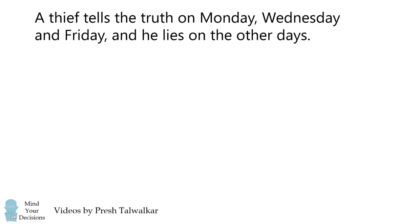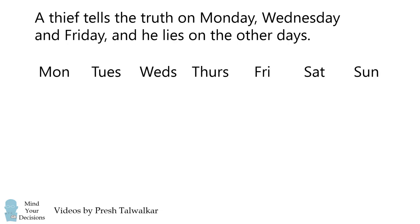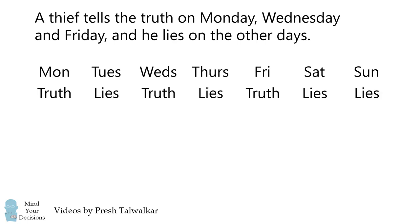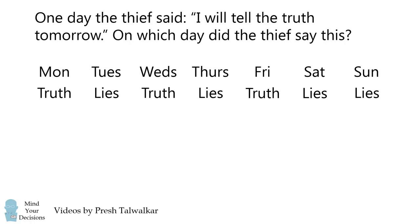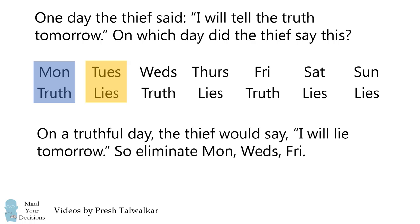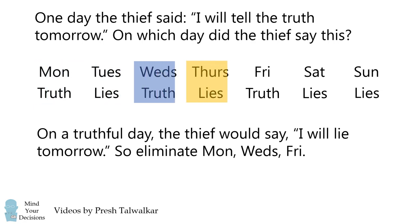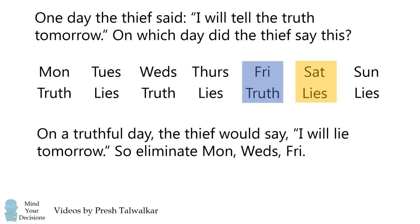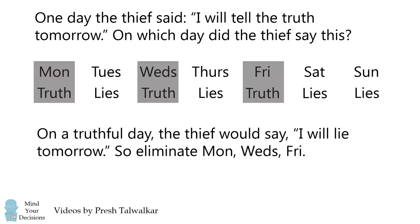Let's get started with the warm-up puzzle. Let's write the days of the week and note that the thief tells the truth on Monday, Wednesday, and Friday, and lies on all of the other days. Now, suppose the thief says 'I will tell the truth tomorrow' on a Monday. On a Monday, he has to tell the truth, but the truth is that he's going to lie the next day. So, on a truthful day, the thief would have to say 'I will lie tomorrow.' This is true for all of the truthful days, so it's not possible that the thief says this on a Monday, Wednesday, or Friday. We eliminate these as possibilities.